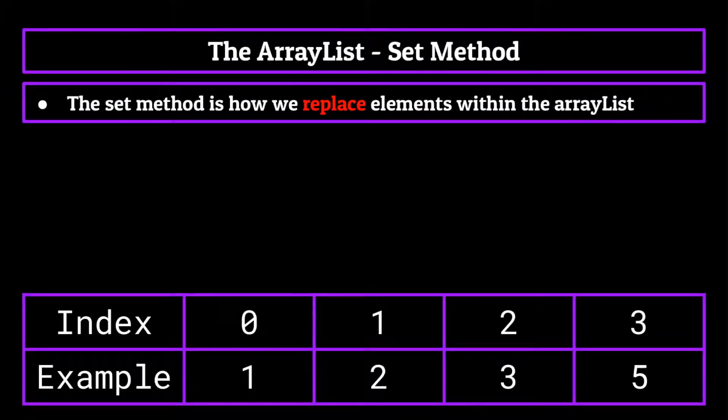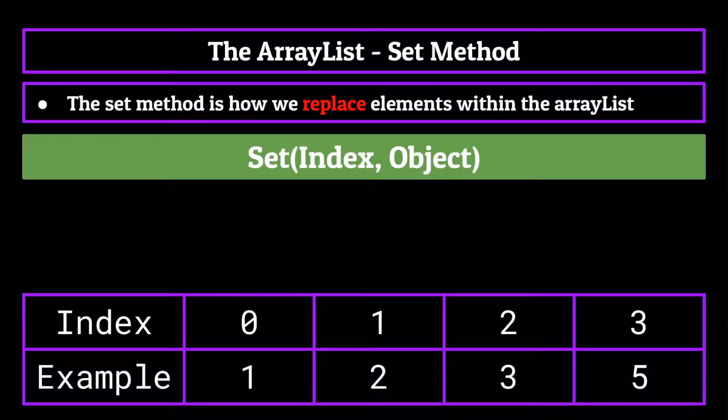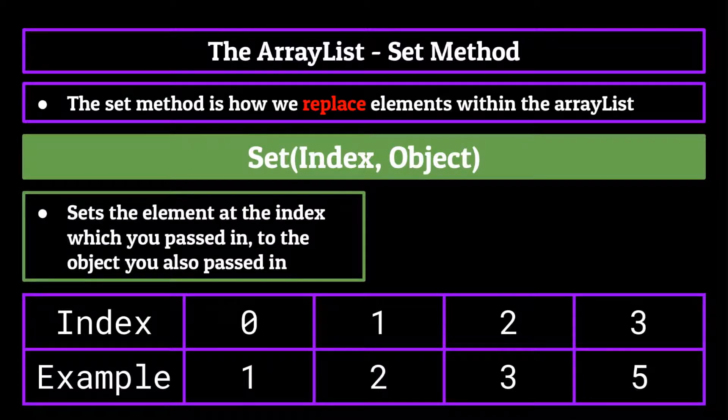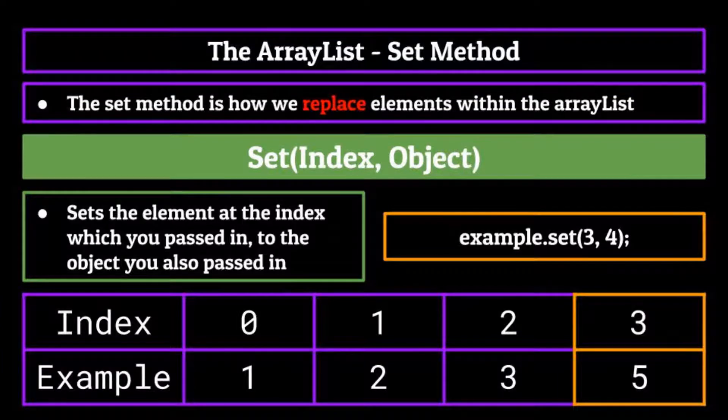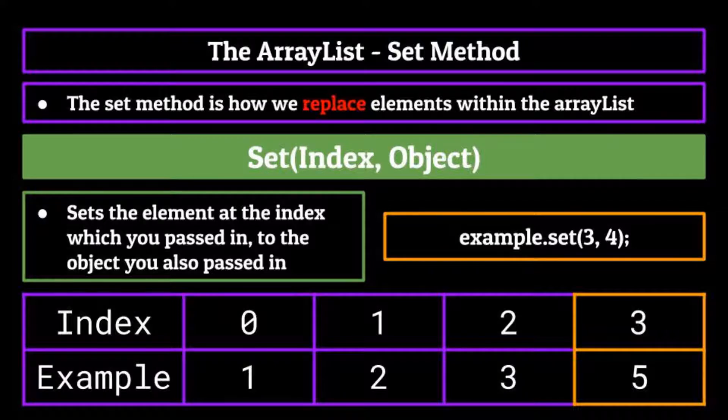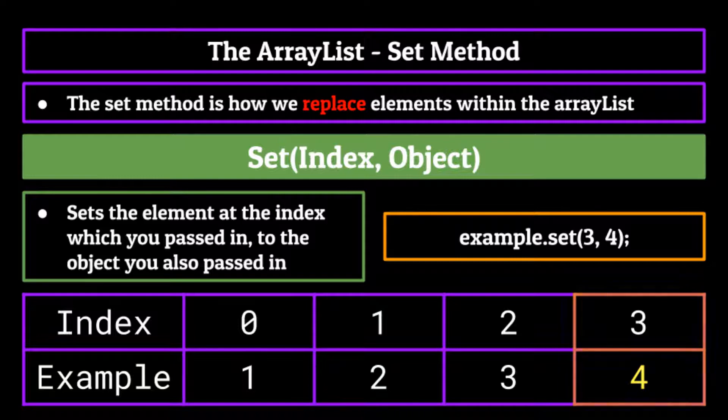The next method is the set method. And this is how we actually replace elements within the ArrayList. Much like the name implies, it takes in an index and an object as arguments, and will set the element at the index which you passed in to the object you also passed in. So if we wanted to set the number five in our ArrayList to be four, so that it matches nicely with the others, what we would do is call example dot set, and within the parentheses pass in the index location of the element we want to set, in this case three, and then also an integer we want to be placed in that location, in this case four. This call will override the element at position three to be four instead of five. Now, you should really be careful when you're using this method, because you don't want to accidentally override an important element within your ArrayList.